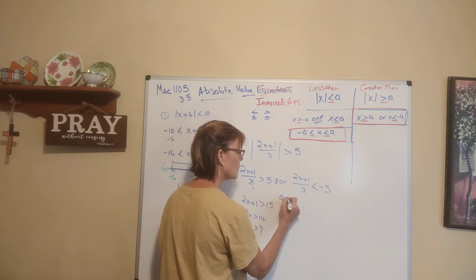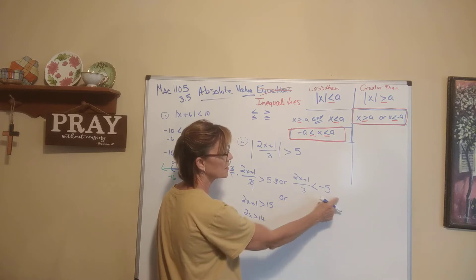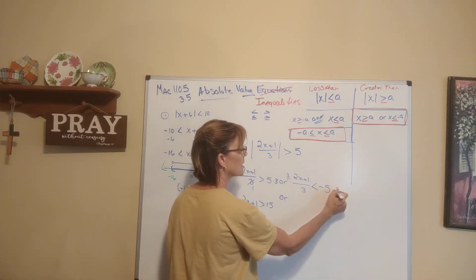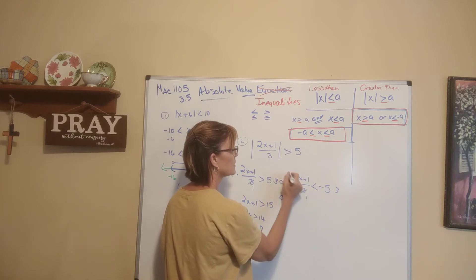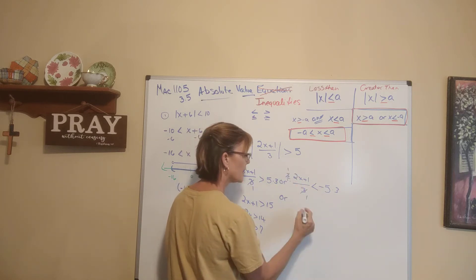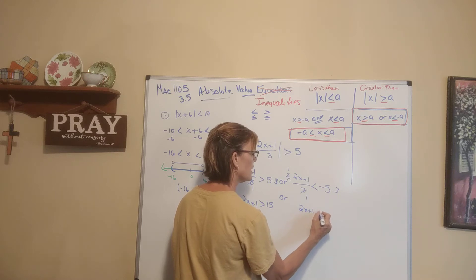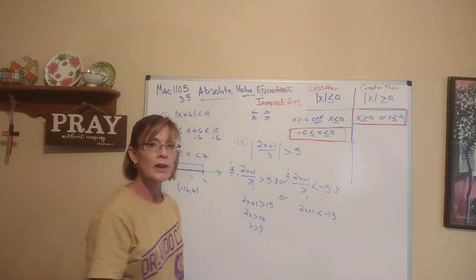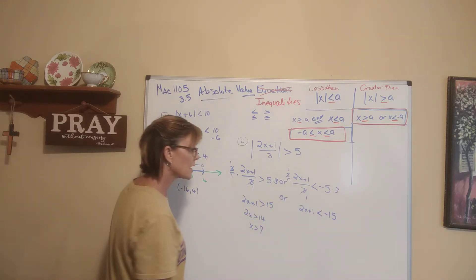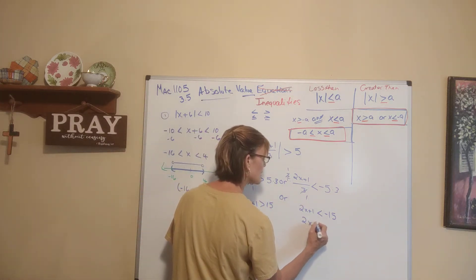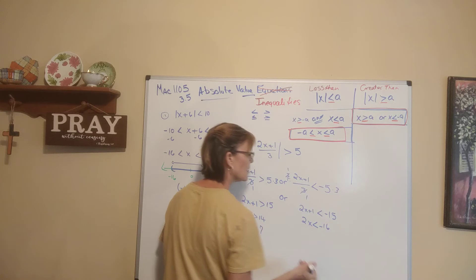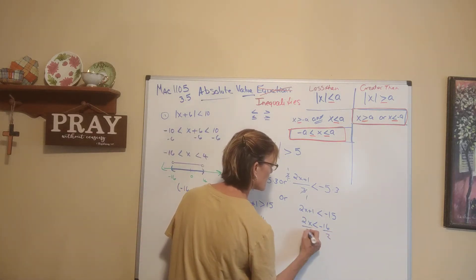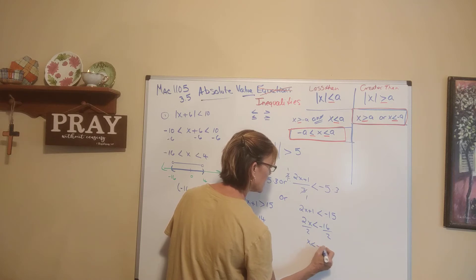Or, on the other side: 2x plus 1 divided by 3 is less than negative 5. I multiply both sides by 3, giving me 2x plus 1 is less than negative 15. I subtract 1 from both sides: 2x is less than negative 16. I divide both sides by 2, and get x is less than negative 8.